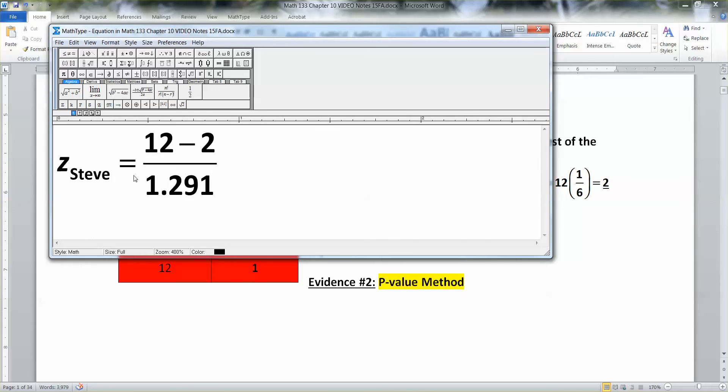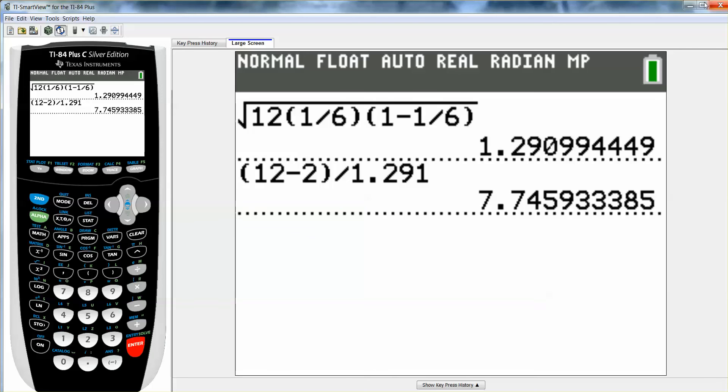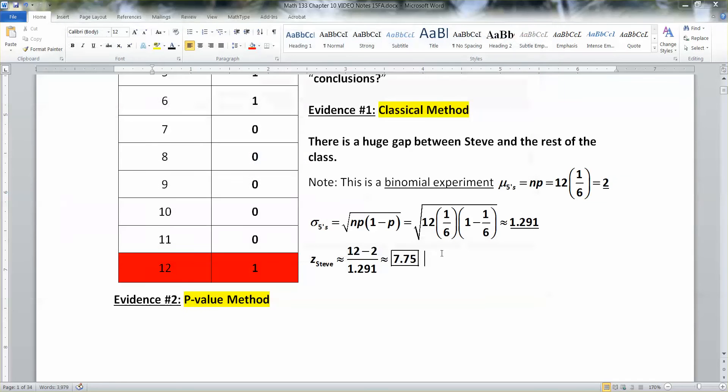I know the mu and the sigma and the x value of 12. So I would just use this formula right here. So it's x minus mu. So 12 take away the mu of 2, divided by 1.291, roughly. And I will find 12 take away 2, close parentheses, divided by 1.291. And I get about 7.75. That is huge. That is a very large Z-score.